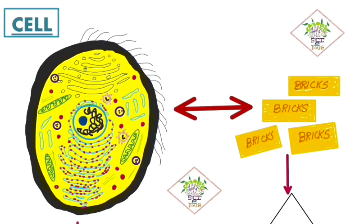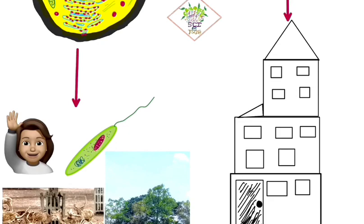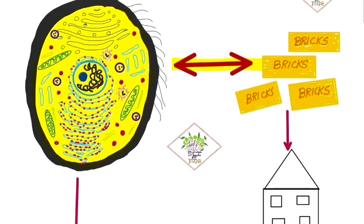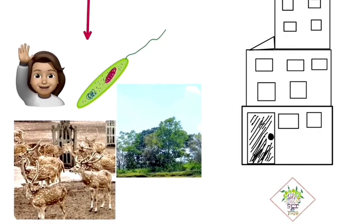You must be surprised to see I have drawn cell and bricks side by side and have marked them as equivalent. Why? Because as bricks are joined one after the another to form a beautiful house, in the same way cells are also joined together one after the other to form any living organism. Be it human being, be it a bacteria, be it the beautiful plants or any animals which we see around us.